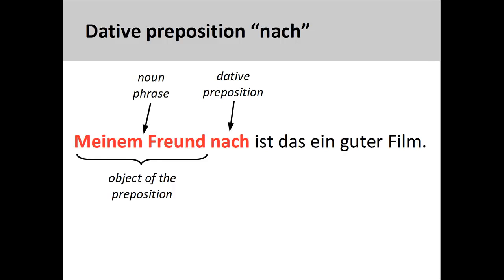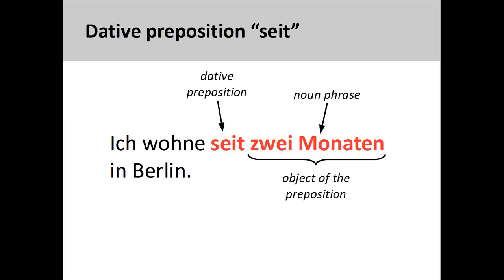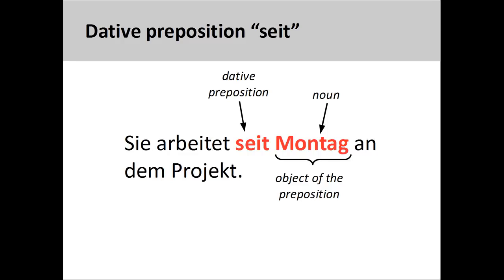The preposition 'seit' indicates a duration of time, as in 'ich wohne seit zwei Monaten in Berlin' — I have been living in Berlin for two months. Note that 'seit' has a different meaning than 'ab,' which we examined in an earlier presentation. The preposition 'ab' indicates a point in time at which an activity starts, whereas 'seit' indicates how long an activity has been occurring. 'Seit' can also express when an activity was started: 'sie arbeitet seit Montag an dem Projekt' — she's been working on the project since Monday.